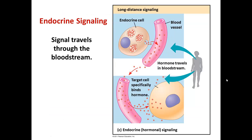Finally, the last type of signaling is endocrine signaling, in which the signal travels a very long distance. An endocrine cell produces a signal that travels through the bloodstream to a target cell very far away in the body, and then the target cell responds in an appropriate manner. This is frequently referred to as hormonal signaling because hormones travel through the endocrine pathway. And that's the end of this video.